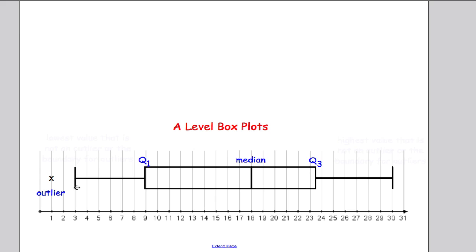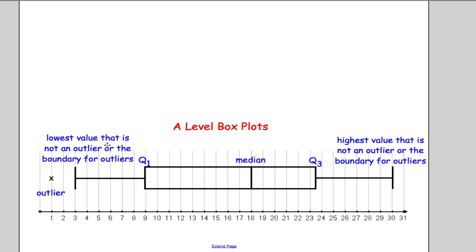This line at the end here is no longer the lowest value. It's now the lowest value that is not an outlier, or it's the boundary for the outlier. This line, as always, is Q1, this line is still the median, and this is Q3, and this line, you've guessed it, will be the highest value that is not an outlier or the boundary for an outlier.